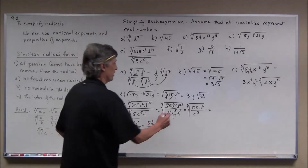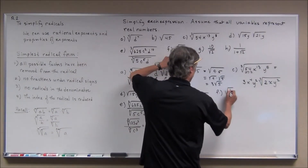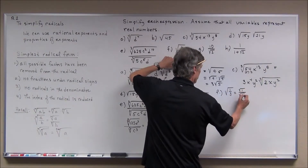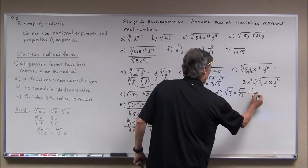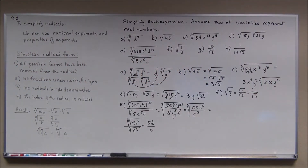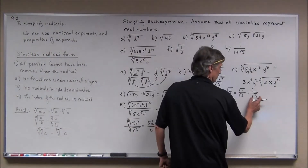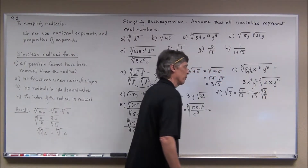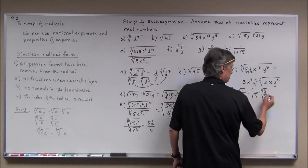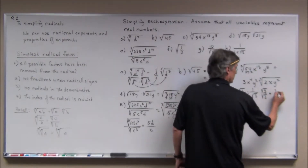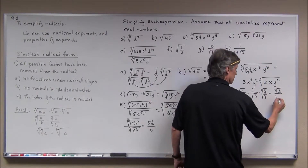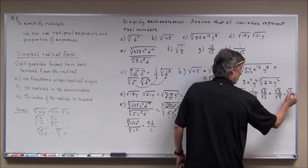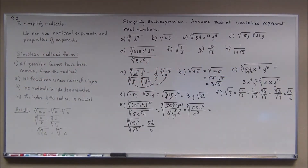For F, I have the square root of a fraction, which I write as the square root of the numerator over the square root of the denominator — that's 1 over the square root of 3. I'm going to rationalize the denominator by multiplying top and bottom by the square root of 3. One times the square root of 3 is the square root of 3, and the square root of 3 times the square root of 3 is the square root of 9, which is just 3. The denominator is now rational and it's in simplest radical form.